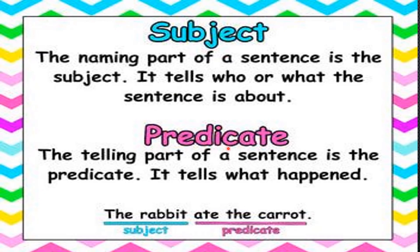Now let's understand predicate. The telling part of a sentence is the predicate. It tells what happened or what is happening. For example, the rabbit ate the carrot. So what is the subject and predicate in this sentence? The rabbit — and this is the naming part. And what is the predicate? Ate the carrot. So it is telling us that the rabbit ate the carrot. What happened? Ate the carrot.